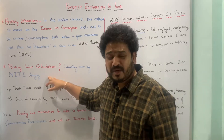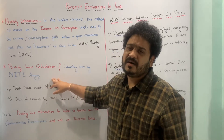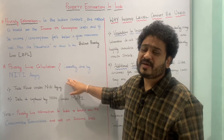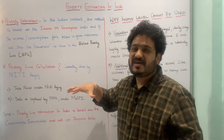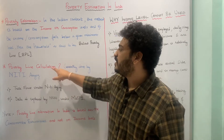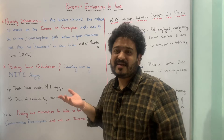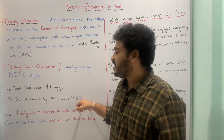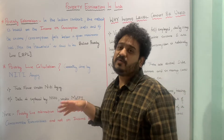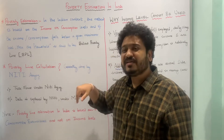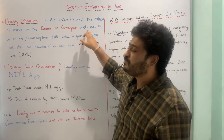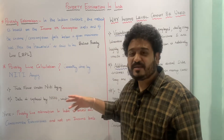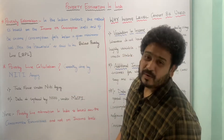NITI Aayog is a think tank whose chairman is the Prime Minister of the country. Within NITI Aayog, there is a task force — a group of individuals — looking at the calculation of the poverty line. The data on consumption is obtained from the National Sample Survey Organization (NSSO) under the Ministry of Statistics and Programme Implementation, Government of India. NSSO publishes reports on consumption expenditure in India, which NITI Aayog uses to calculate the poverty line based on consumption data.